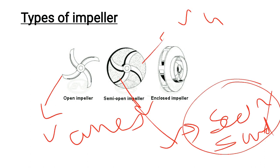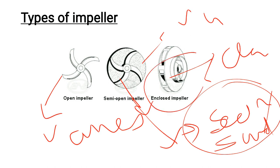The enclosed type impeller has shroud plates on both sides with vanes between them. This type is used for pumping clean water — when we pump clean water, we use the enclosed impeller.